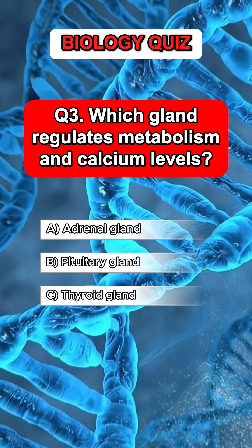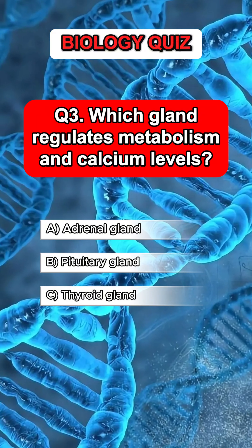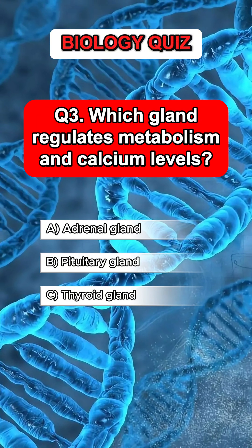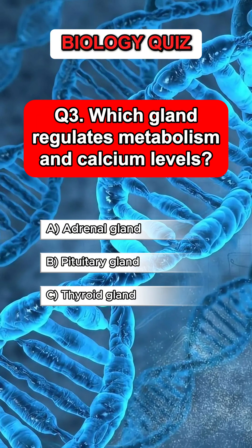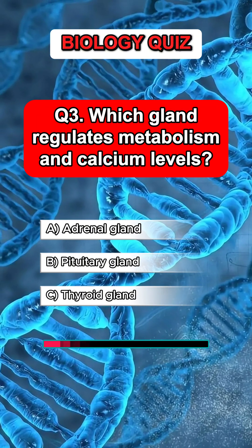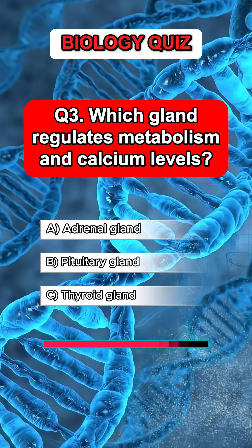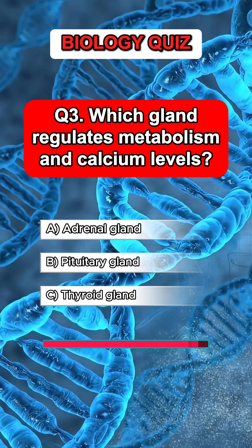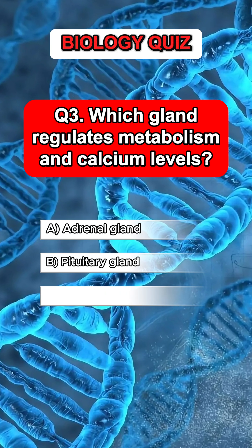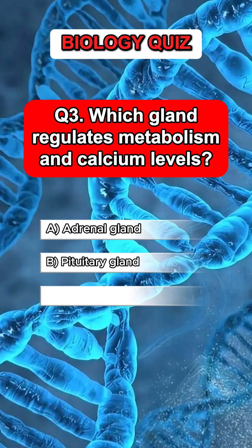Question 3. Which gland regulates metabolism and calcium levels? Answer C. Thyroid gland.